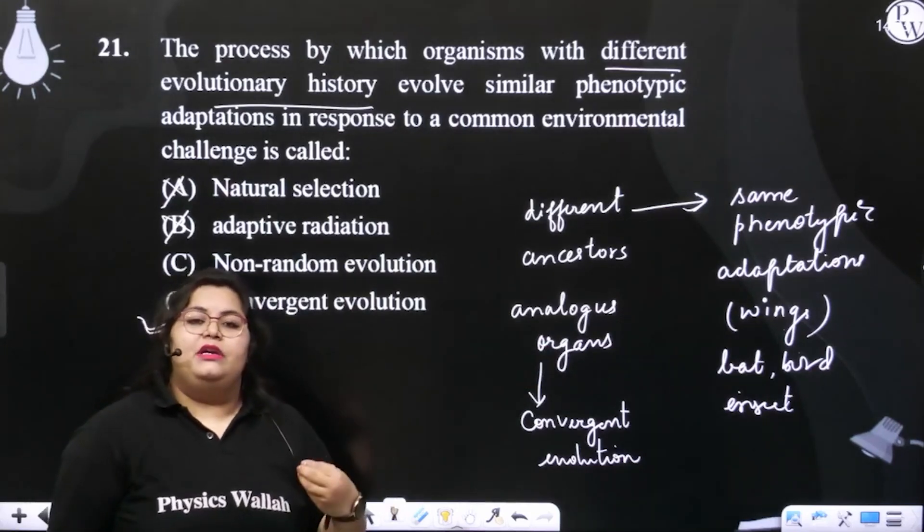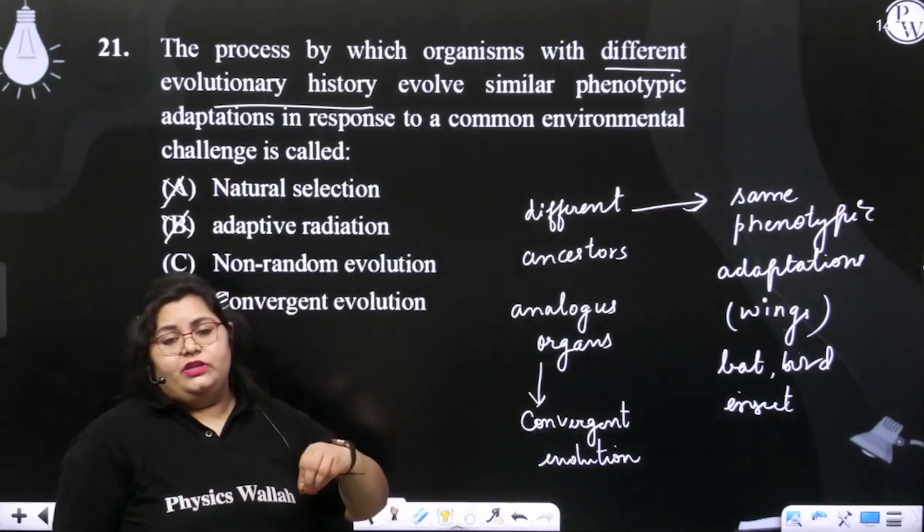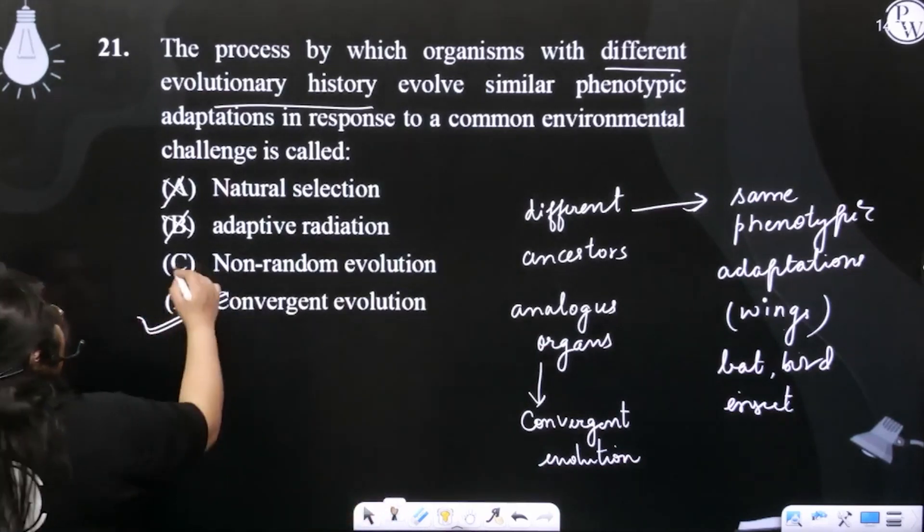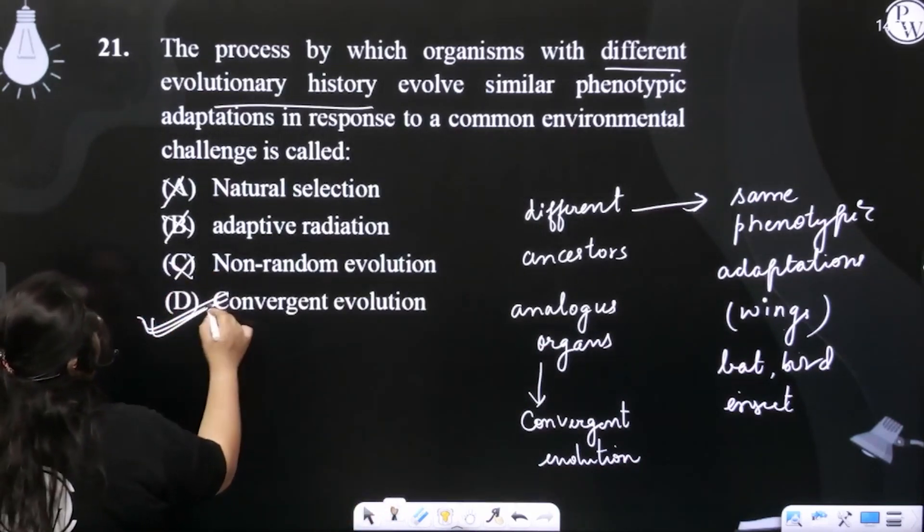Non-random evolution is different and not correct. Option D is correct.